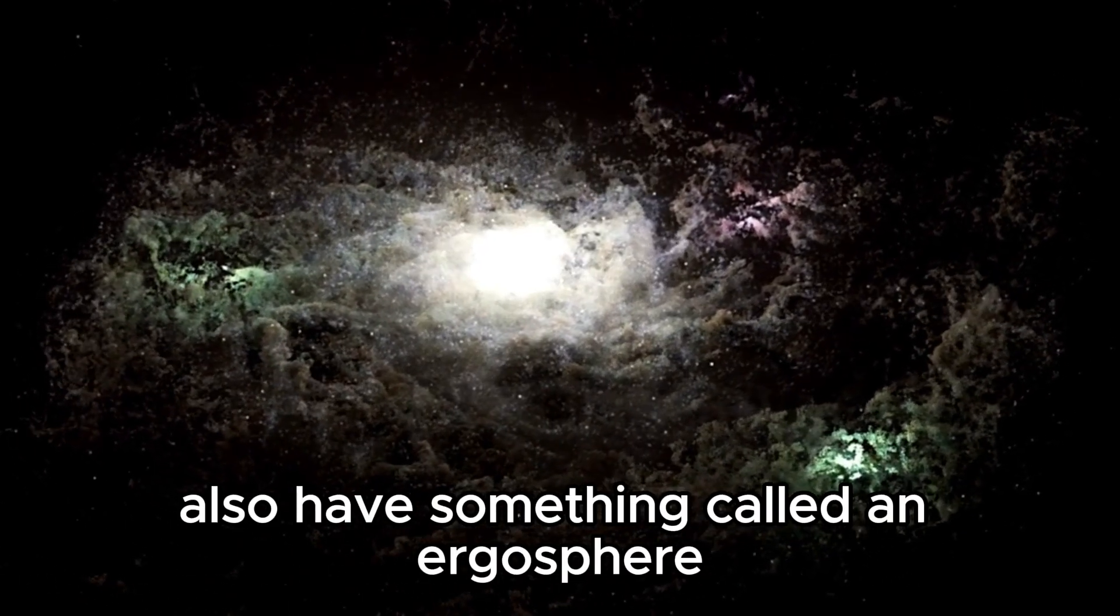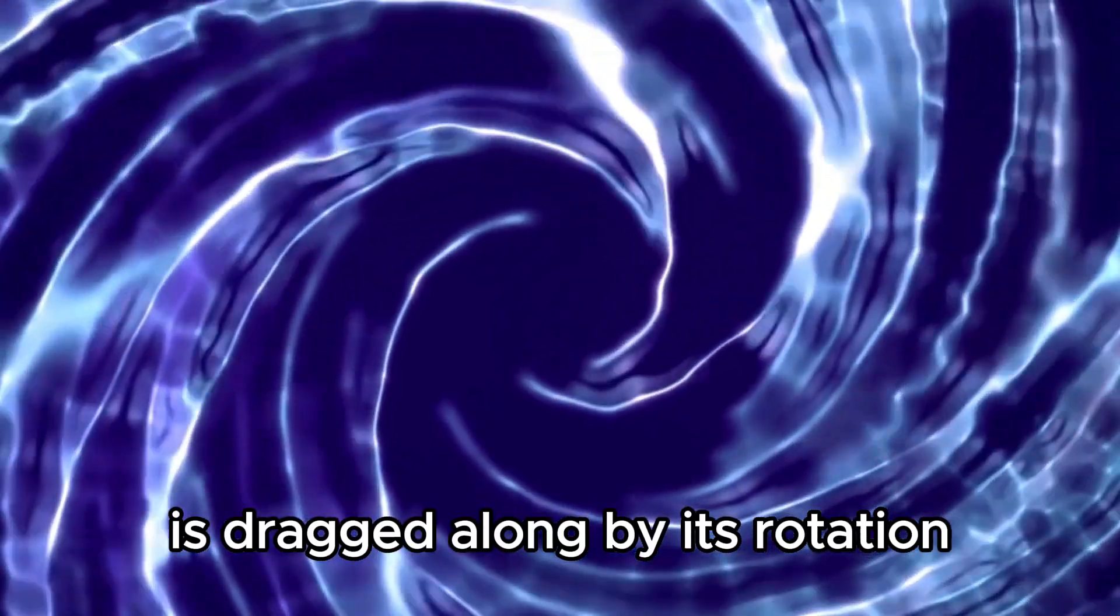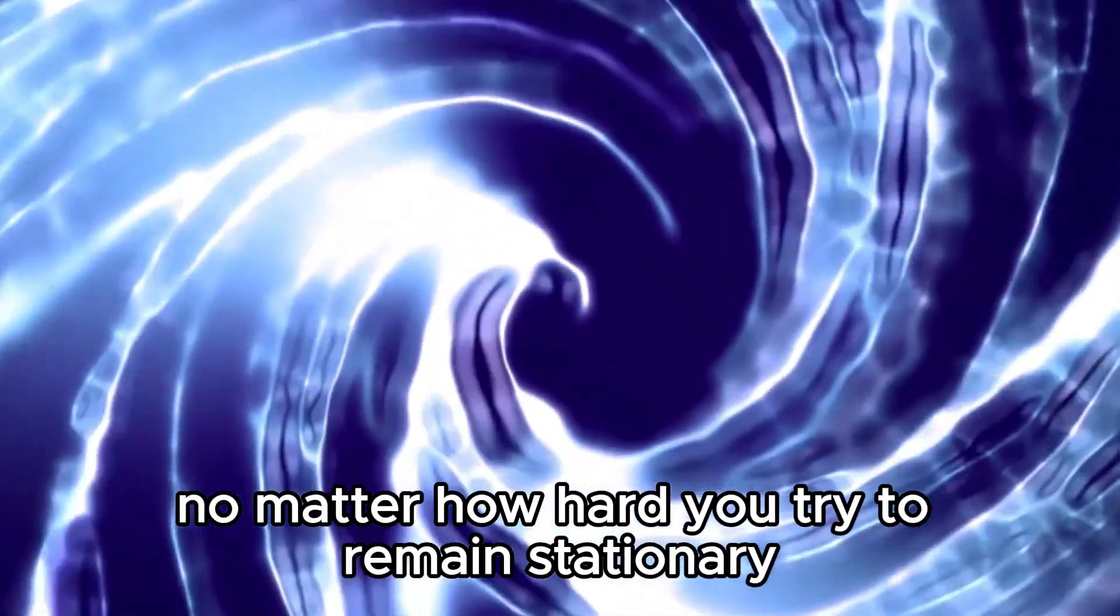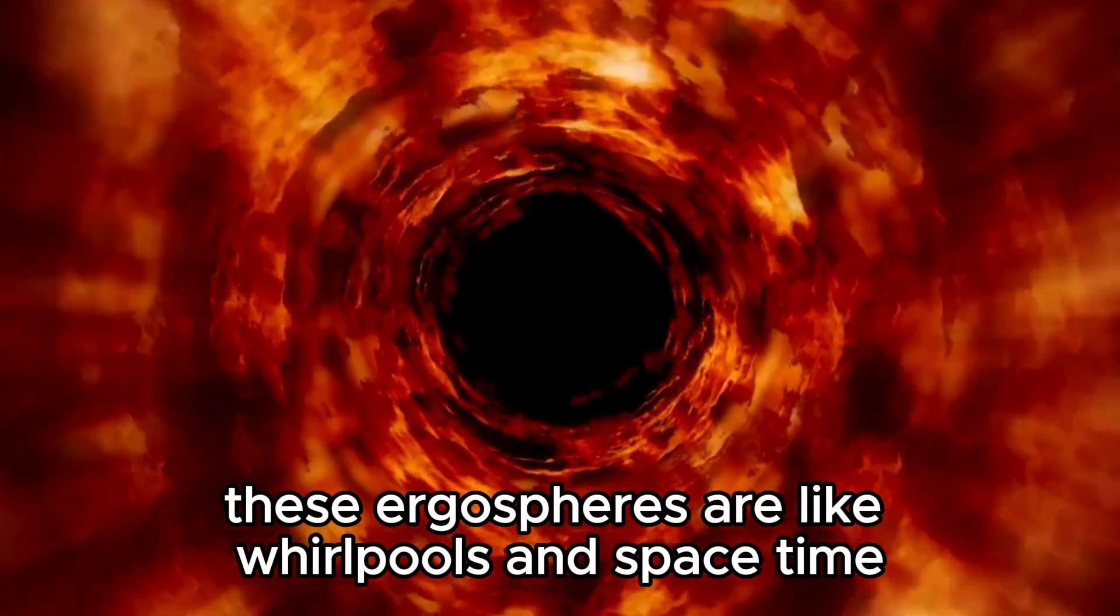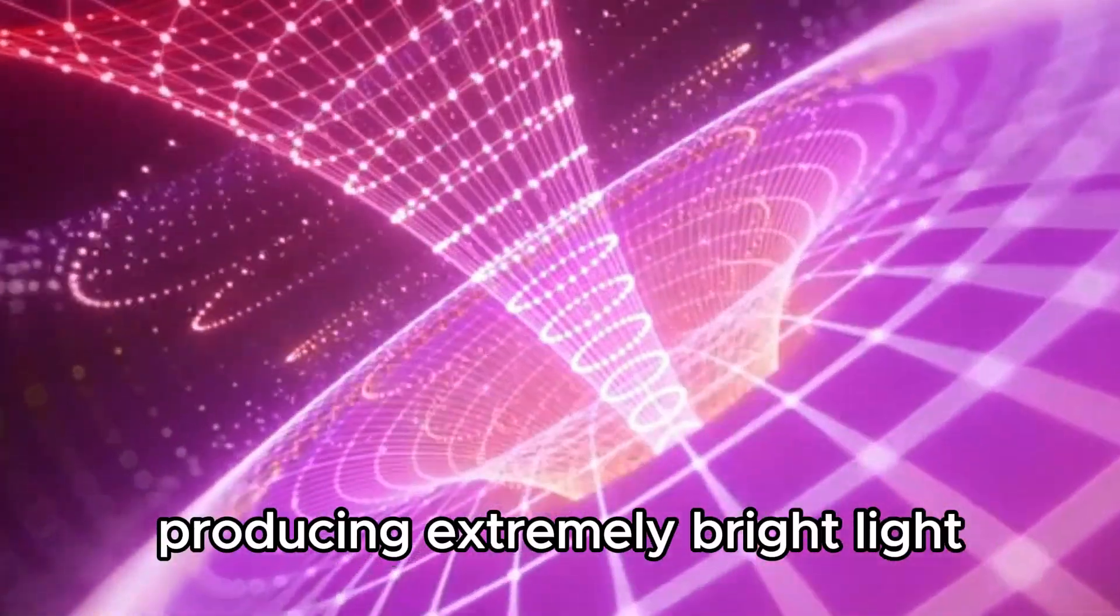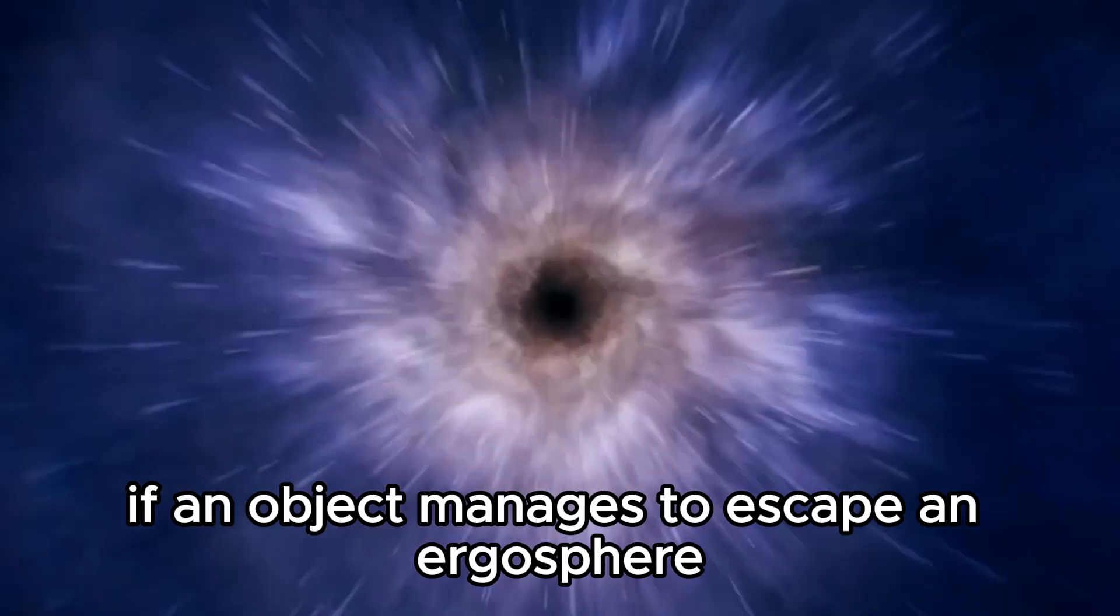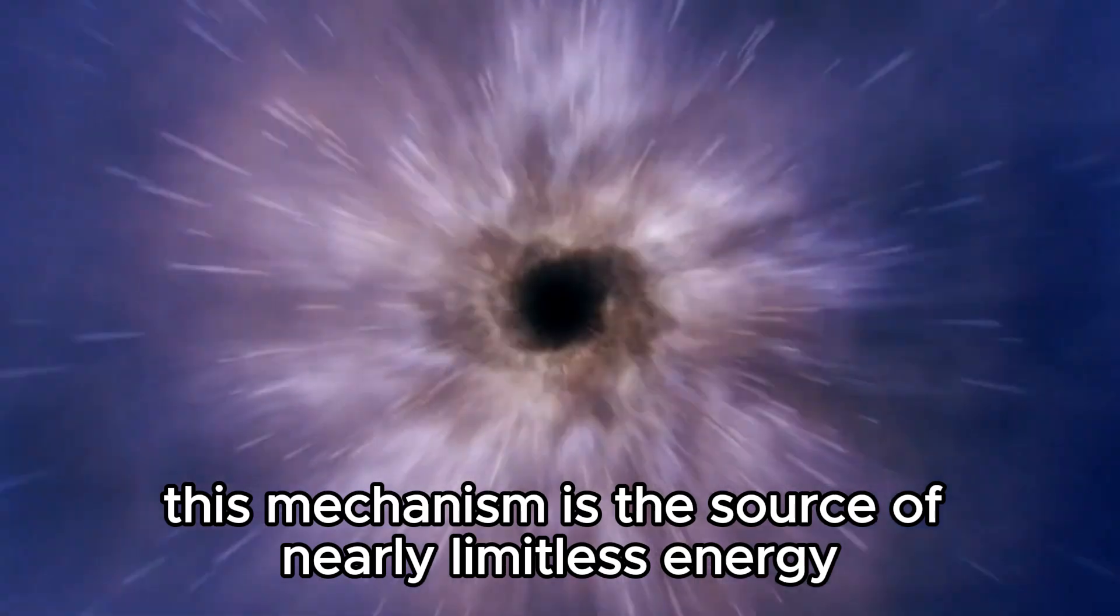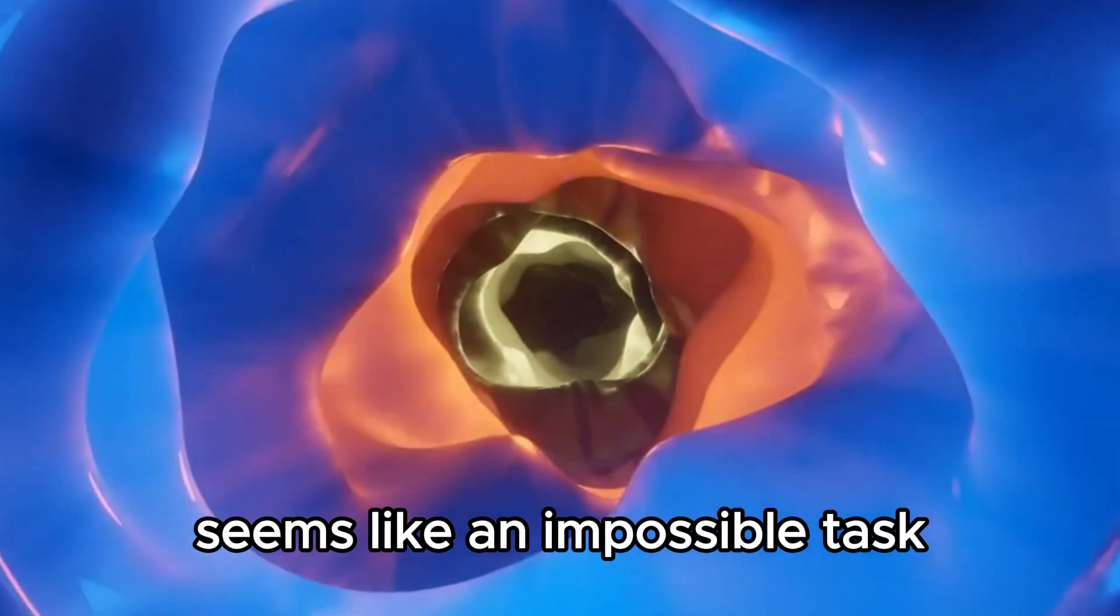Rotating black holes also have something called an ergosphere, swirling zones surrounding a black hole where spacetime itself is dragged along by its rotation, faster than the speed of light. If you happen to be there, no matter how hard you try to remain stationary, it would be to no avail. In a way, these ergospheres are like whirlpools in spacetime, influencing the movement of nearby objects which come in contact with each other, producing extremely bright light because of how insanely fast things move there. If an object manages to escape an ergosphere, it would leave with much more energy than it entered with. In theory, this mechanism is the source of nearly limitless energy, although learning how to extract it seems like an impossible task.